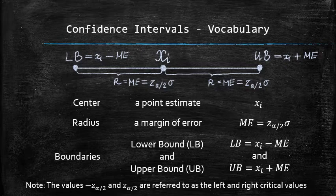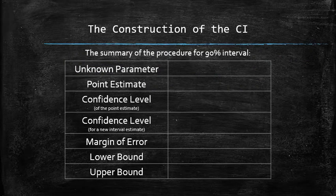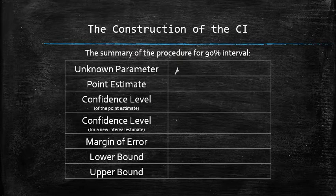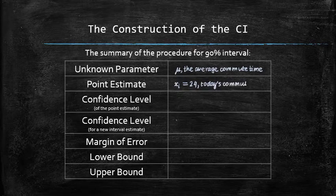In general, to construct an interval means to find its boundaries. To summarize the procedure, I will fill out the following template. The unknown parameter in our problem was μ, the average commute time of Bob. The point estimate that we used was xi equals 24, which was today's commute time.